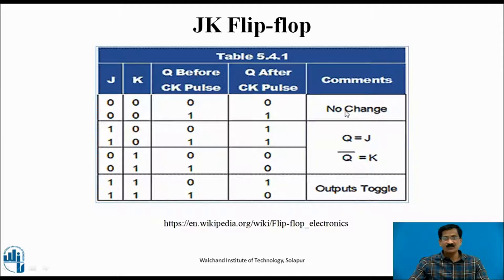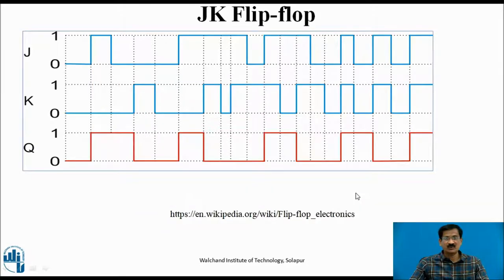In summary: when J and K equal 0, there is no change in output. If J equals 1 and K equals 0, Q equals J and Q-bar equals K. If both J and K equal 1, the output will toggle between 0 and 1.